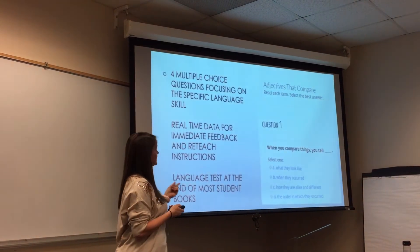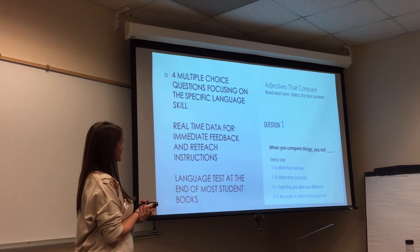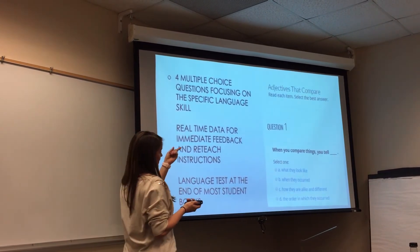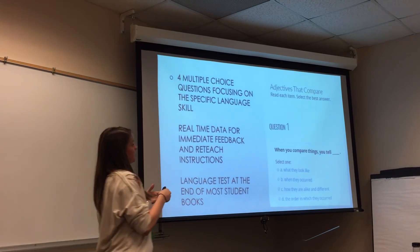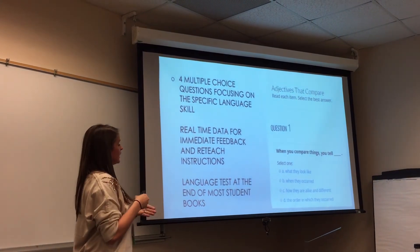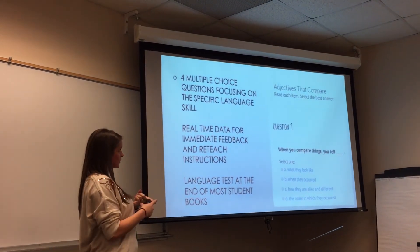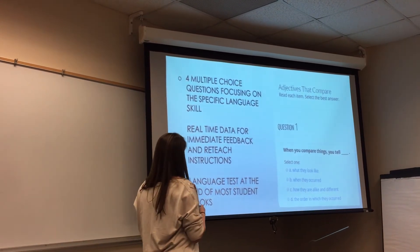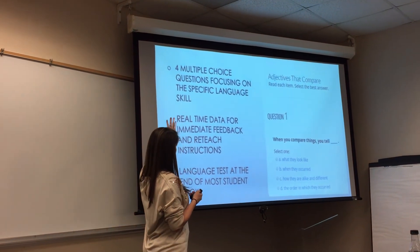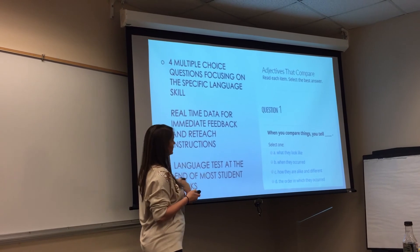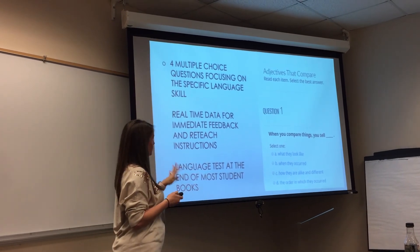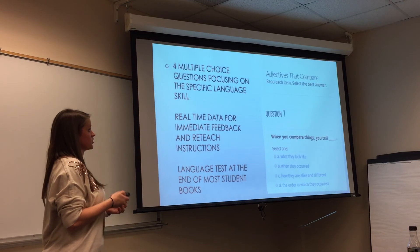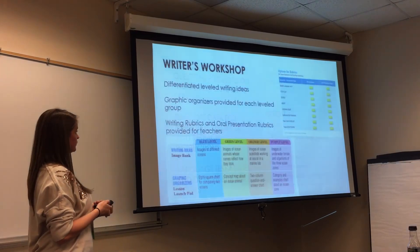Next is the actual language skills content that's in each book. In this book it was adjectives, so that's the language skill they're focusing on. Each book has vocabulary boosters, the language skill, and content. After you finish the language skill, it has, once again, real-time feedback. It has four questions, really simple, just to make sure that your children know that skill for the book.